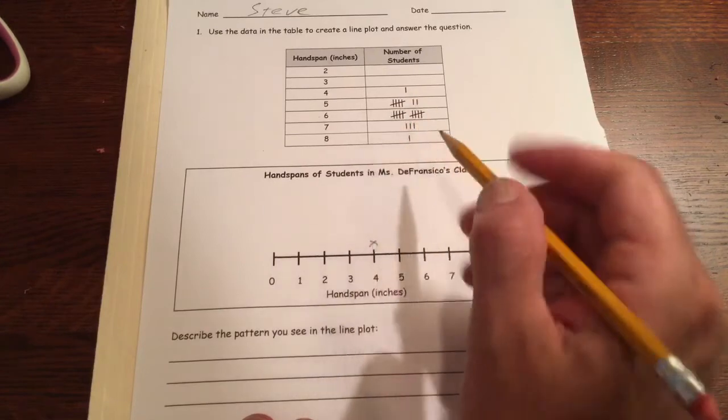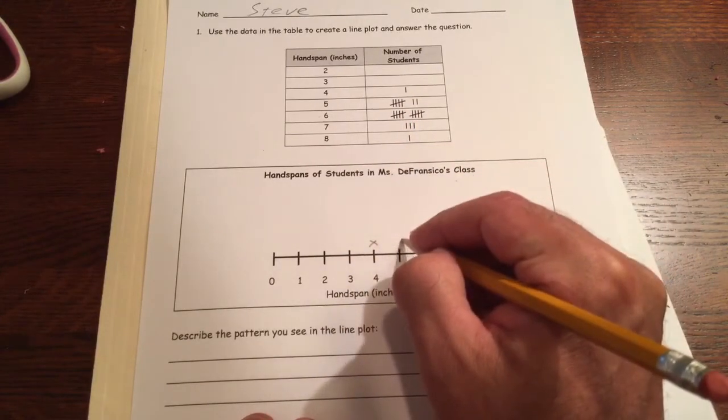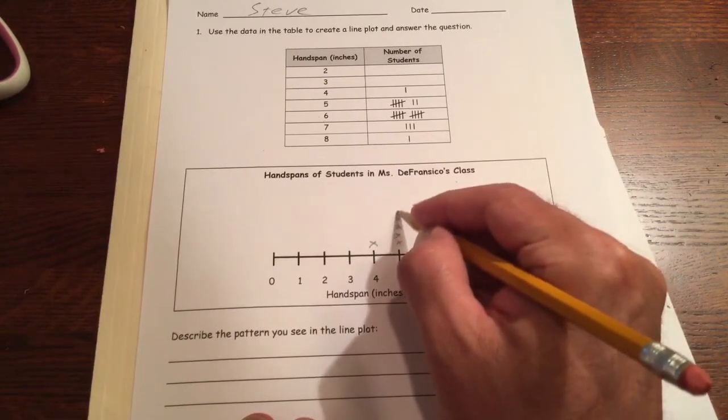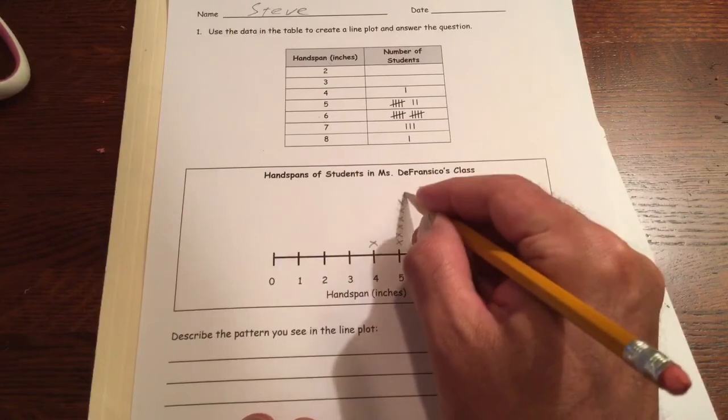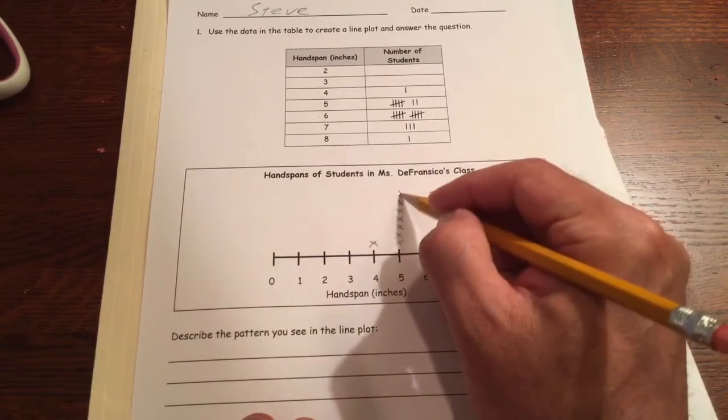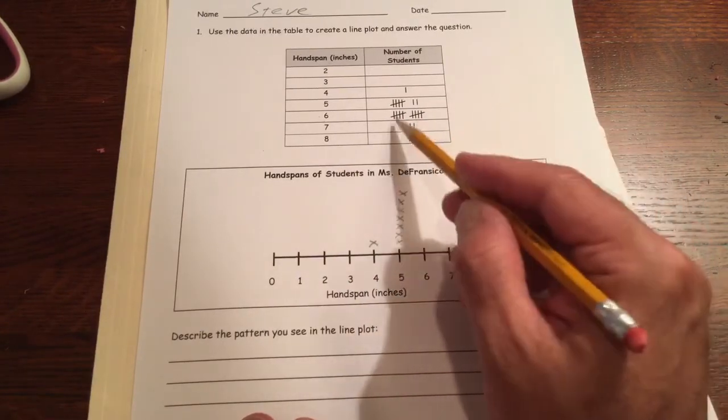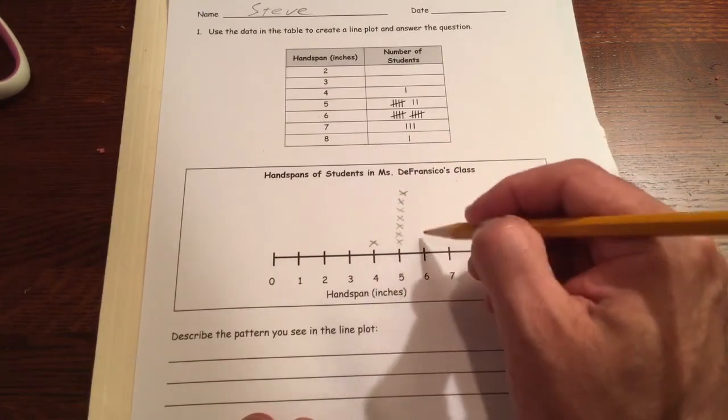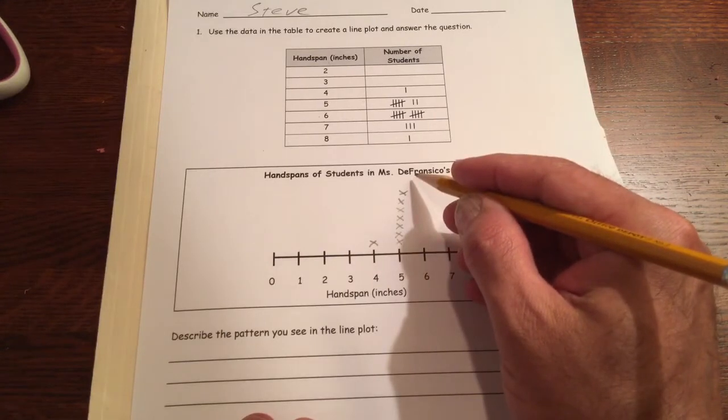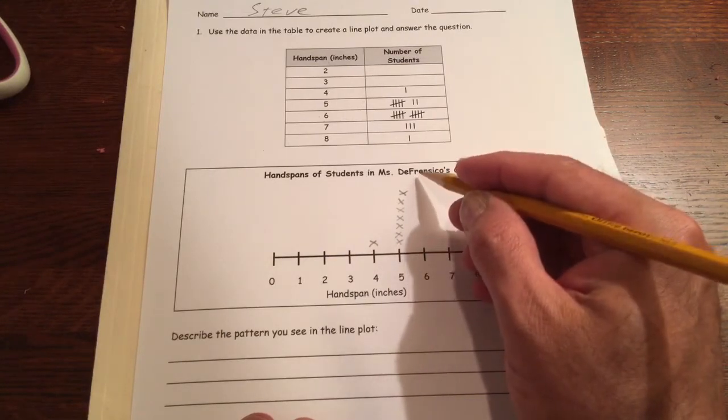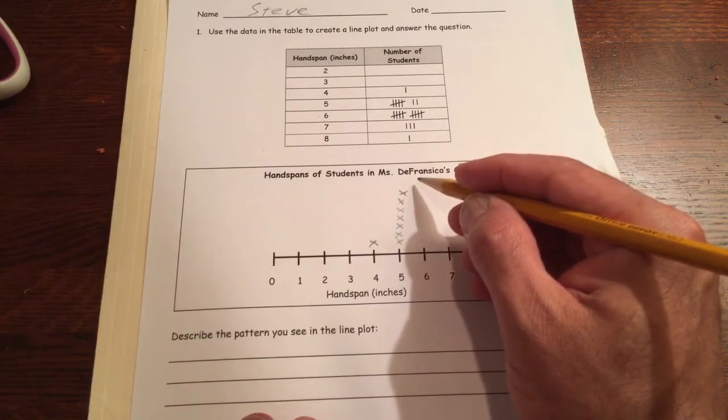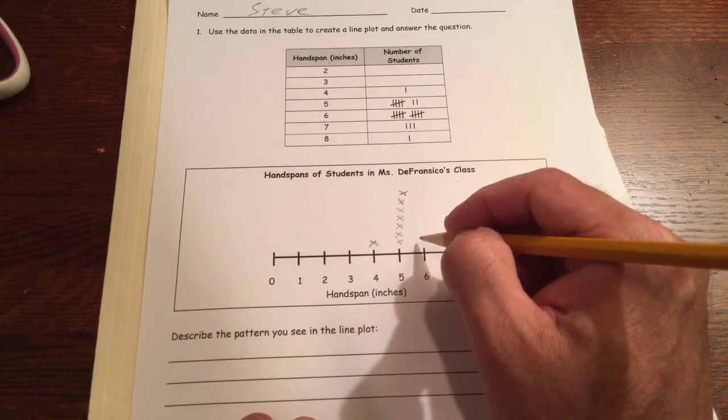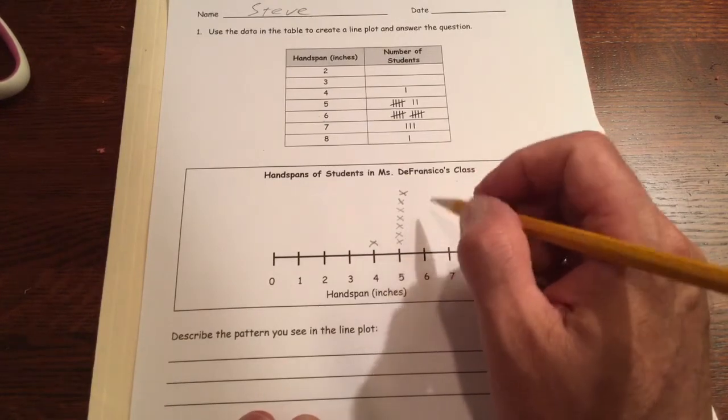Five inches there are seven students, so I'm gonna have to make seven X's. One, two, three, four, five, six, seven. For six inches there are ten people. Now I'm gonna try and make it almost like rows so that we can compare the height of the different numbers and make it just an easy comparison on the graph. The X's kind of have to stay the same size as each other and the same distance apart. It doesn't have to be perfect but just try and keep it close.